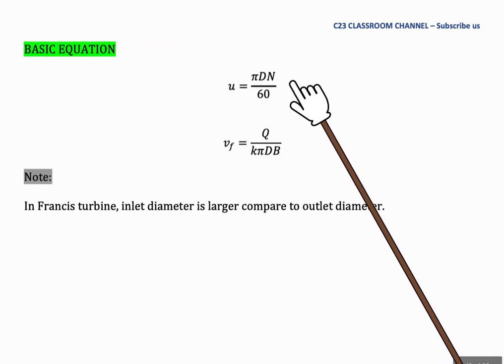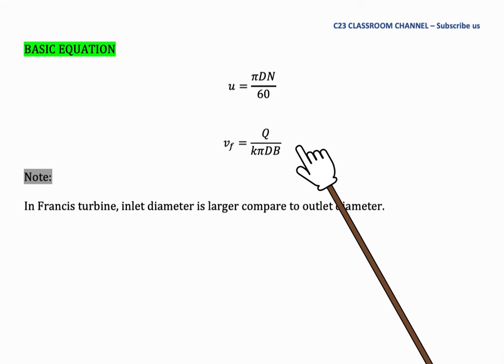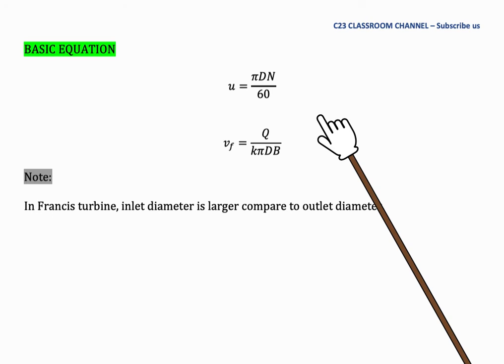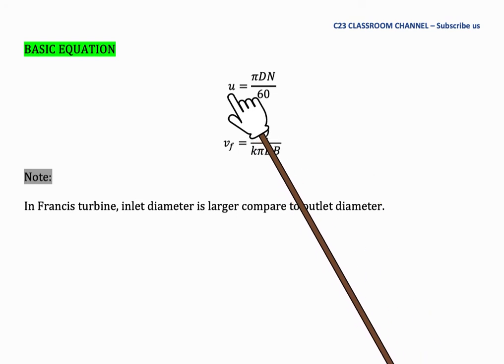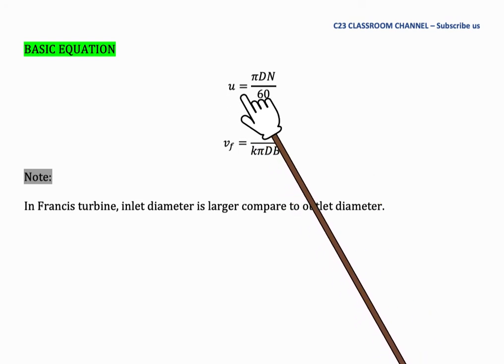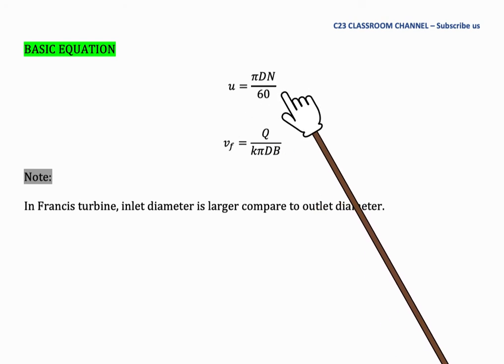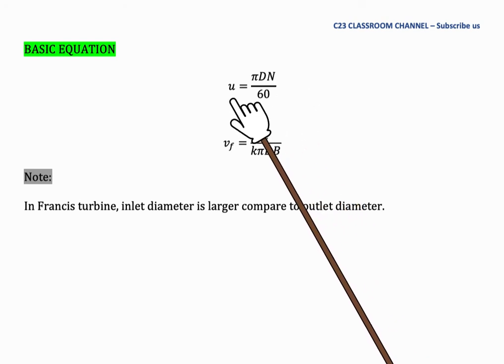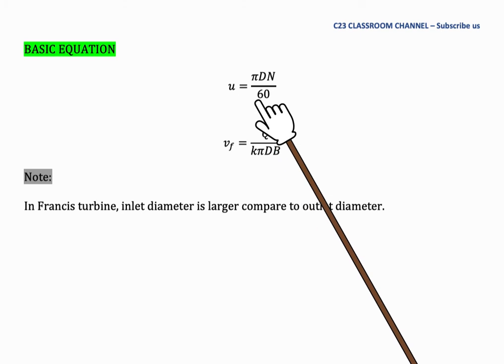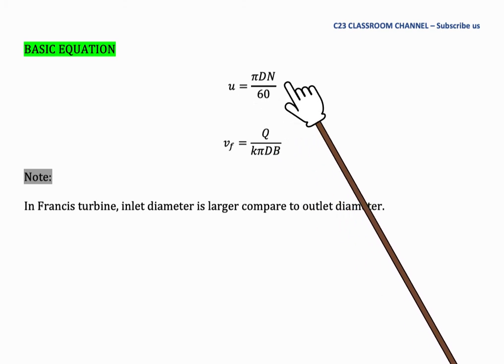And these are two basic equations that we can calculate using equations in Francis turbines. It is the same as the equations we use in centrifugal pumps. Number one is tangential velocity U. It equals π DN over 60. So when you want to calculate U1, you need to use diameter at point 1 to fulfill this equation.